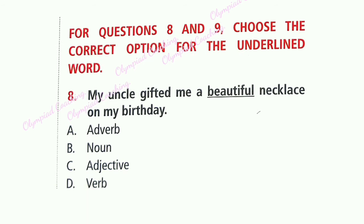For questions 8 and 9, choose the correct option for the underlined word. Question 8: My uncle gifted me a beautiful necklace on my birthday today. Regarding the word 'beautiful,' it is an adjective. Option C is correct. An adjective tells about the noun. How is the necklace? It is beautiful. So 'beautiful' tells about 'necklace,' which is a noun.